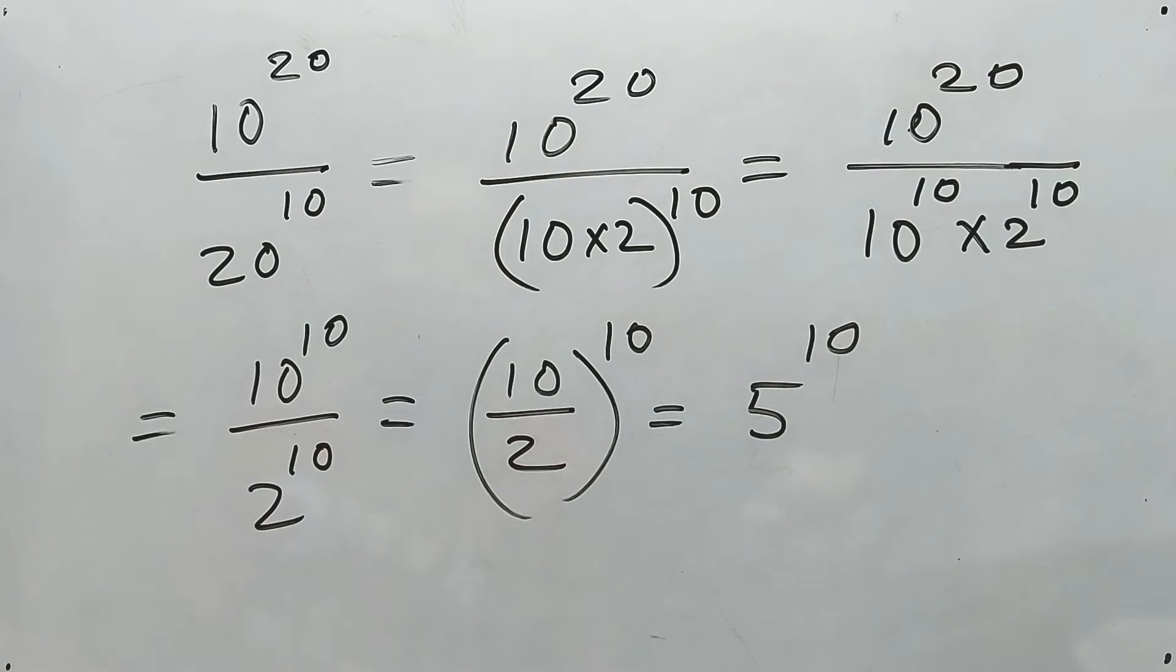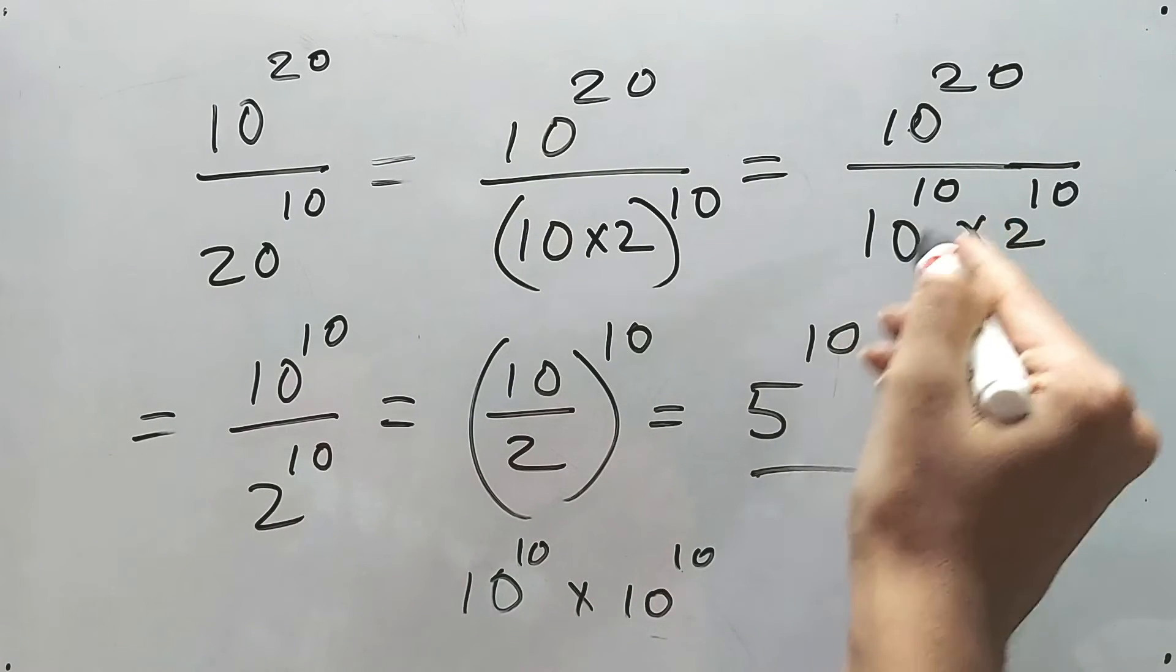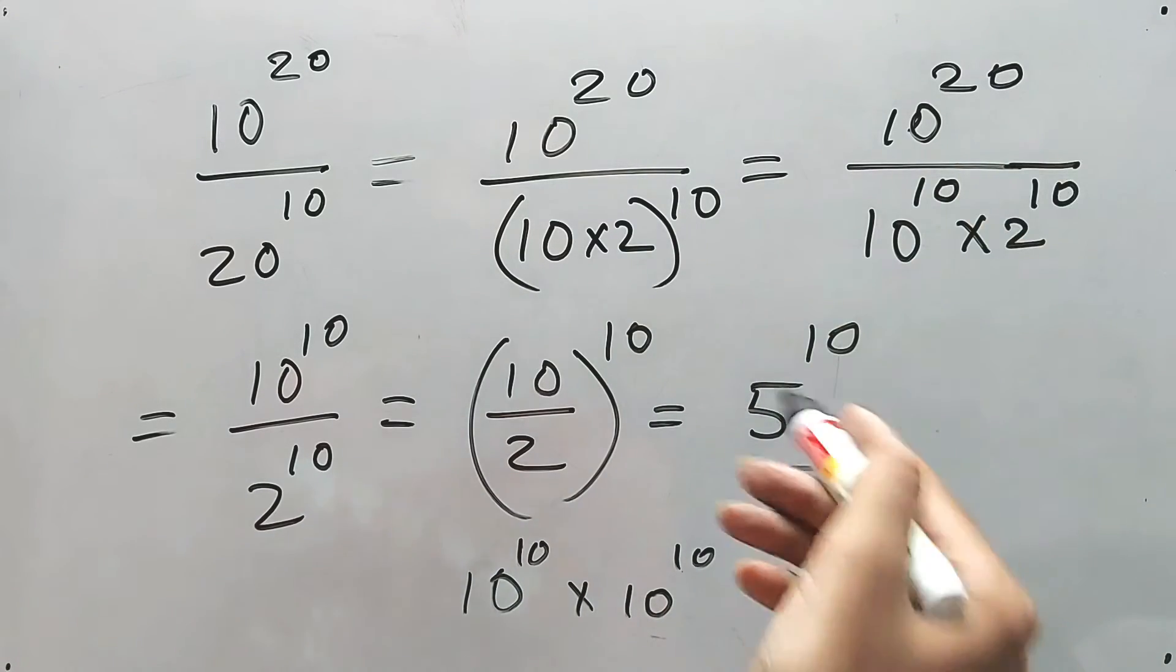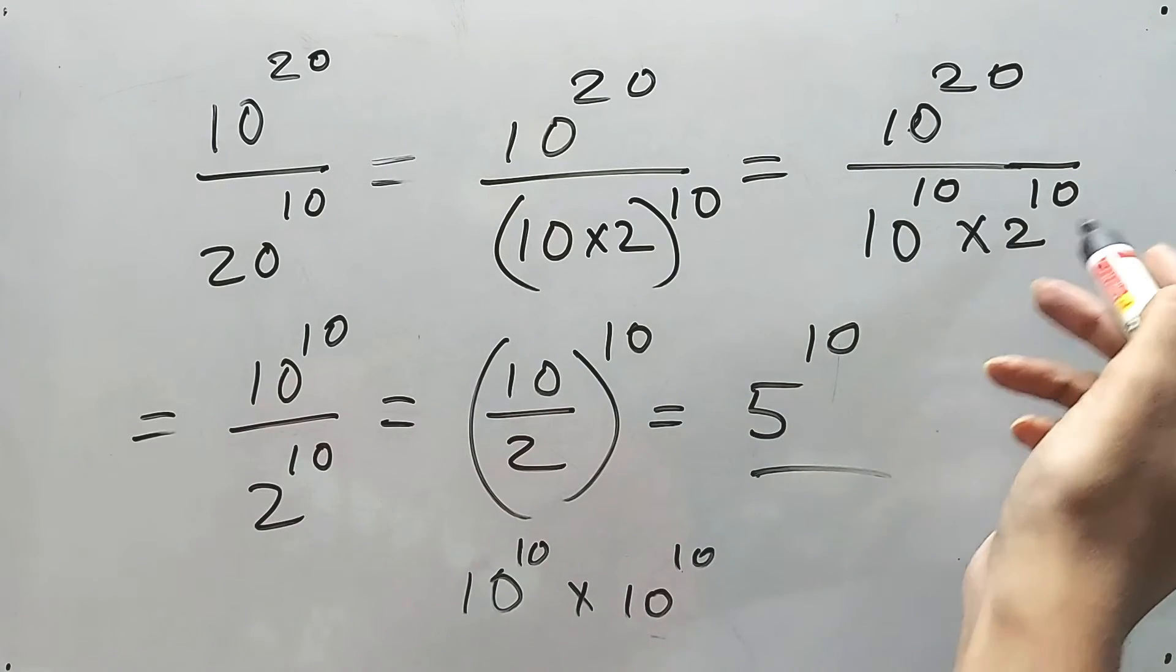Clear? This is the answer. Well, you can do it another way also. That is 10 to the power 20, you can do like 10 to the power 10 into 10 to the power 10, right? And here 10 to the power 10 is there, so you can cancel in this way. And there also you will find 10 to the power 10 on the upper side at numerator, and denominator it will be 2 to the power 10, so answer will be same.